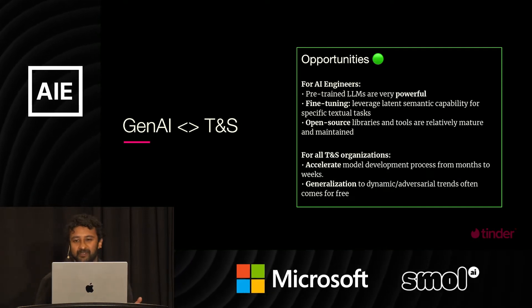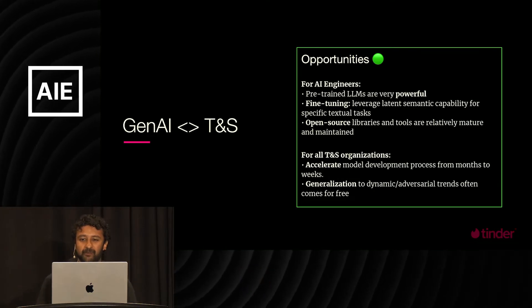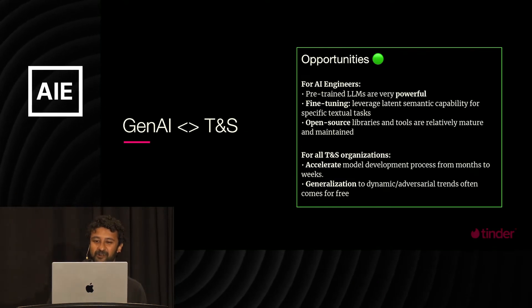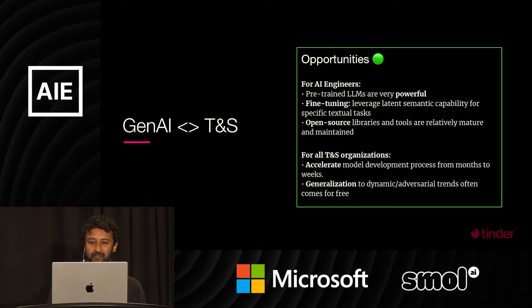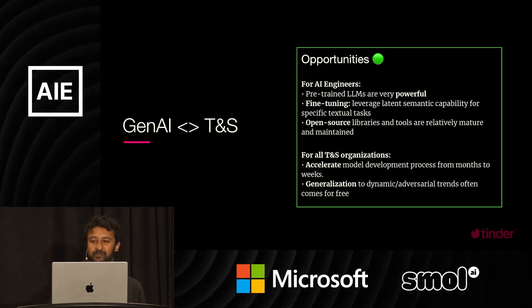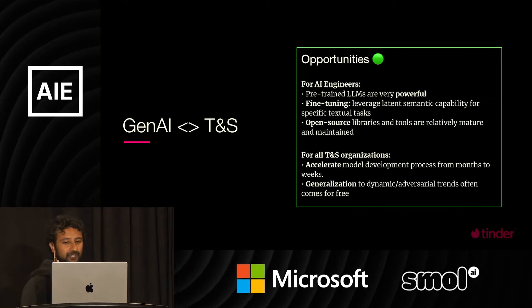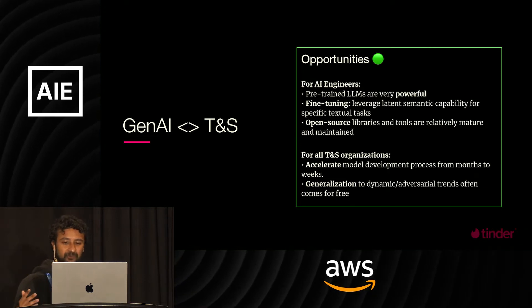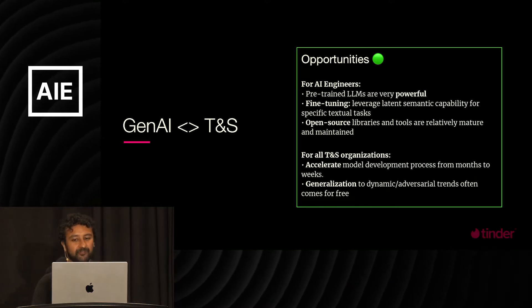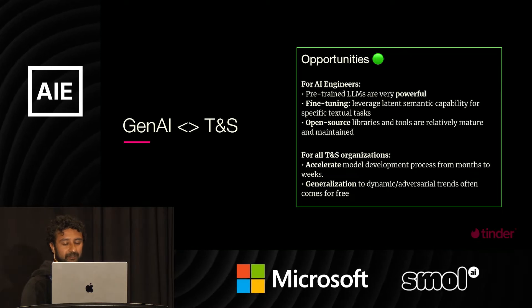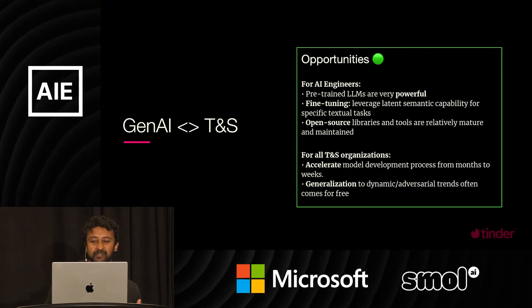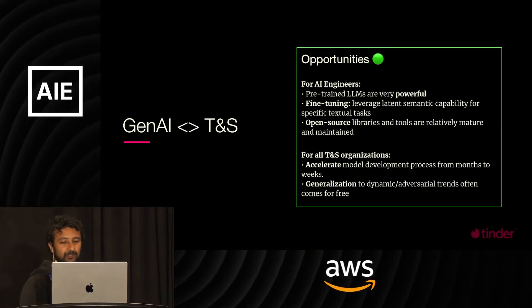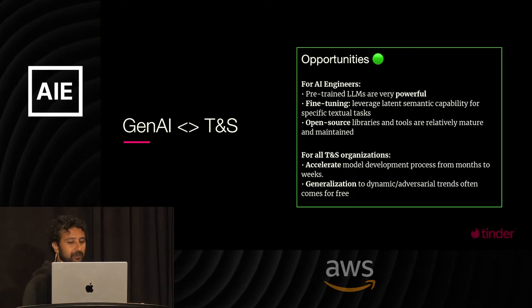Now that we've covered some of the major problems that Gen AI is causing for the trust and safety industry, there are actually some big reasons to be hopeful as well. AI labs at both startups and big companies have already done the hard work of pre-training and open sourcing LLMs for everyone's benefit. Out of the box, these are really powerful — they have latent semantic capability and often global language coverage. Just try doing a few-shot example with prompt engineering LLaMA-3 or Mistral to detect any kind of violation; it usually works pretty well. By fine-tuning these models, we can achieve state-of-the-art performance, in some cases better than few-shot GPT-4, on downstream textual detection tasks. The open source community has produced libraries and tools that are relatively mature, making fine-tuning easier than ever.